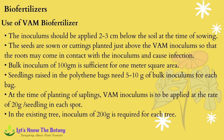VAM inoculant should be applied two to three centimeters below the soil at the time of sowing. Seeds are sown or cuttings planted just above the VAM inoculant so that roots come in contact with the inoculant and cause infection. Bulk inoculant of 100 grams is sufficient for one square meter area. Seedlings raised in polythene bags need 5 to 10 grams of bulk inoculant per bag. At the time of planting saplings, VAM inoculant is applied at 20 grams per seedling, and for existing trees, 200 grams of inoculant is required per tree.